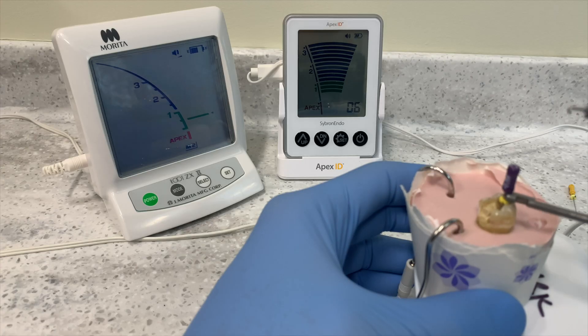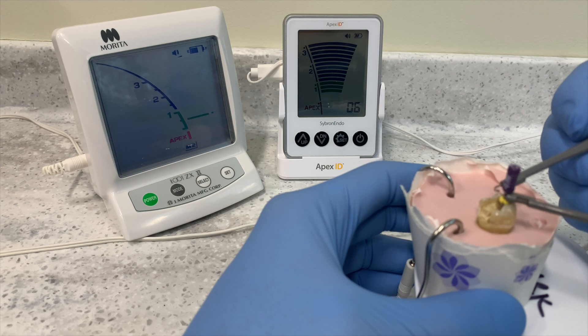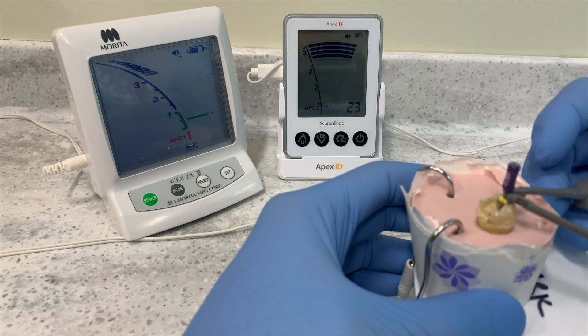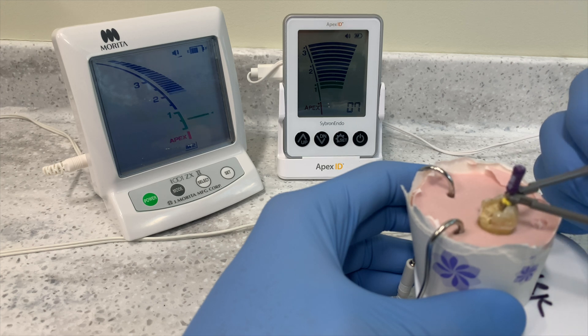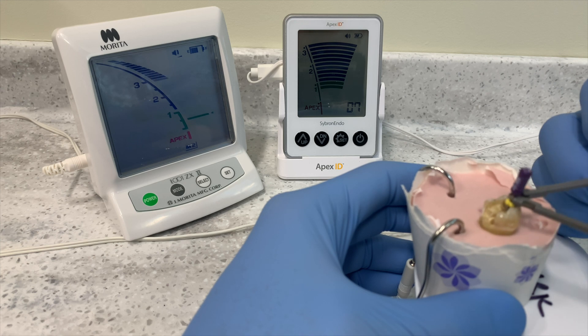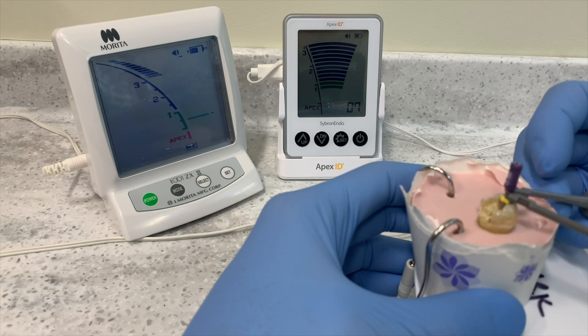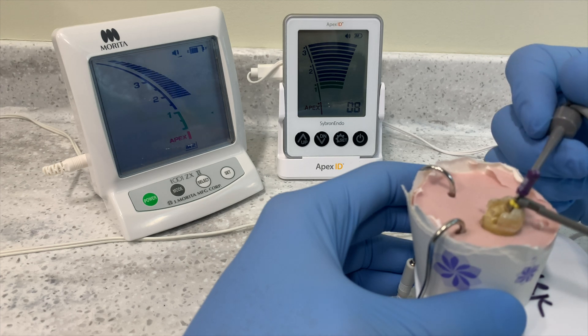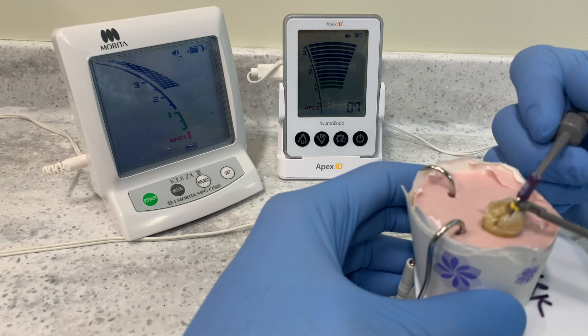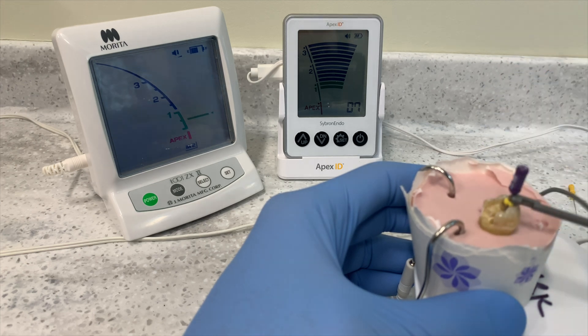And if you really want to get crazy and put two apex locators on at the same time, let's see what happens. They go into like defibrillation. Oh, it's a little crazy here. The Morita is not happy, and I think the Cybron one is winning. They're beeping at the same rate. All right, hopefully that helps. We'll talk to you soon. Cheers.